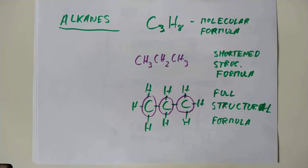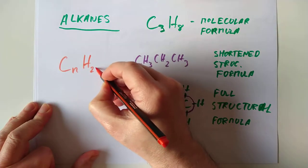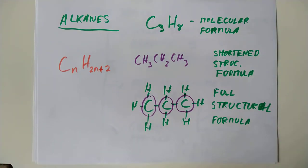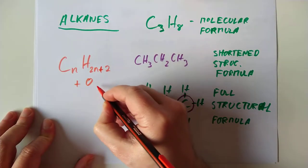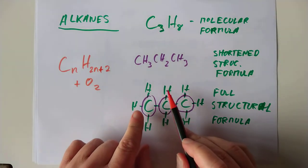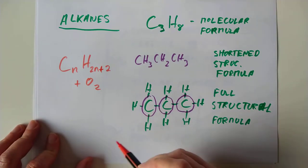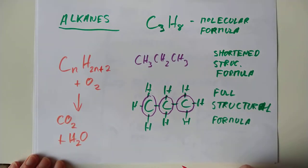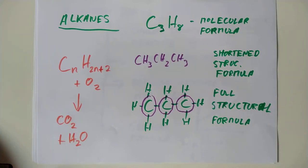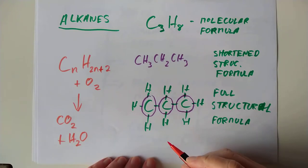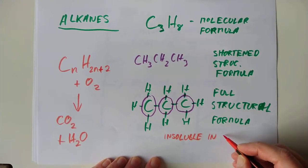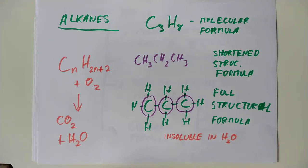Anything else about alkanes you're required to know? Yes — they are CₙH₂ₙ₊₂. If you were to burn any of the alkanes, you rip the molecule apart, stick each atom to oxygen, and make the oxides: carbon dioxide and hydrogen oxide, otherwise known as water. The SQA also want you to know that all alkanes are insoluble in water — that has certainly popped up in recent years. For example, you could bubble methane gas through a glass of water and it would never dissolve.